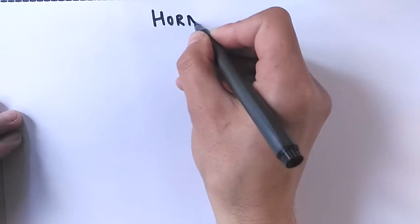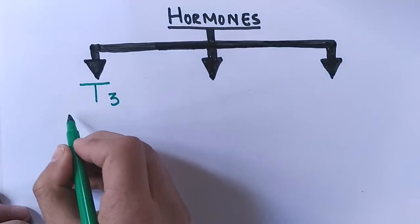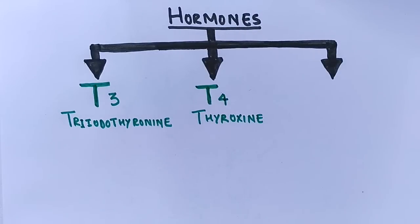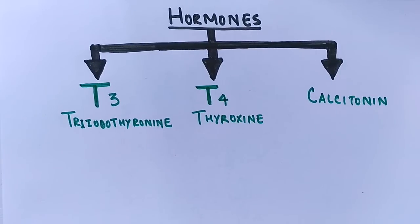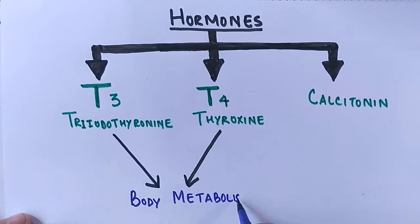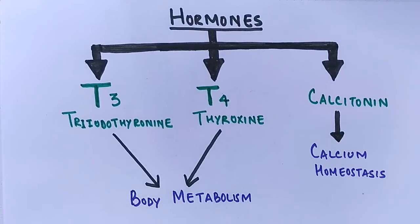Now let's look at the hormones secreted by the thyroid gland. The thyroid gland secretes three hormones: the first is T3, also called triiodothyronine; the second is T4, also called thyroxine; and the third is calcitonin. T3 and T4 are the primary or major hormones of this gland. They regulate whole-body metabolism, targeting almost all tissues, while calcitonin regulates calcium homeostasis.